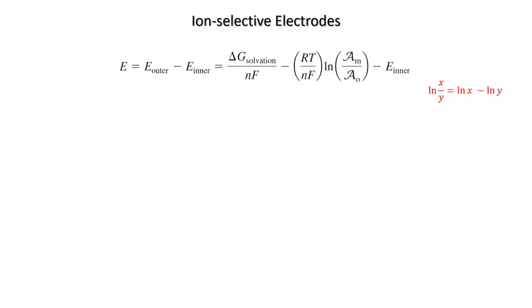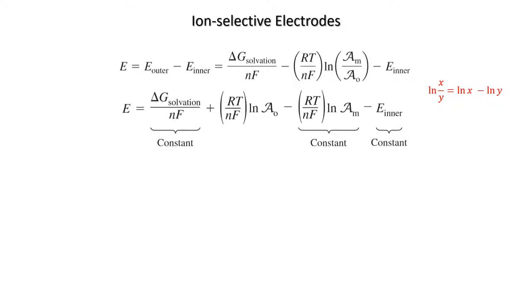Remember that the natural log of x over y is natural log of x minus the natural log of y. So all the other terms apart from RT over nF natural log of a_naught are constants, and we can add these together. So we would get a straight-line plot of the potential difference of the cell against the natural log of a_naught.